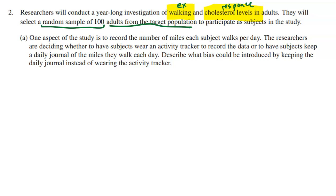Part one says: one aspect of the study is to record the number of miles each subject walks per day. The researchers are deciding whether to have subjects wear an activity tracker to record the data, or have subjects keep a daily journal of the miles they walk each day. Describe what bias could be introduced by keeping the daily journal instead of wearing the activity tracker.